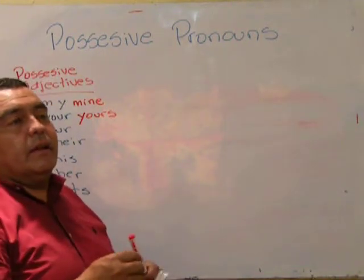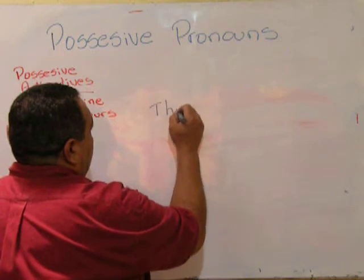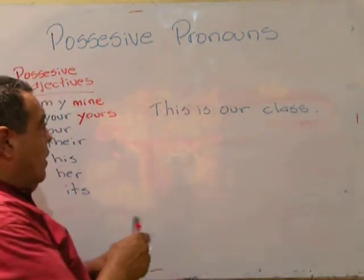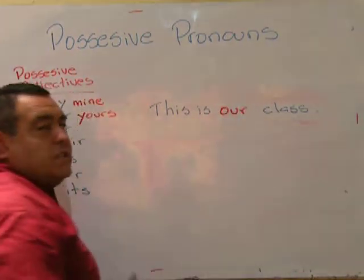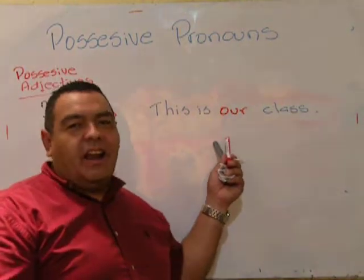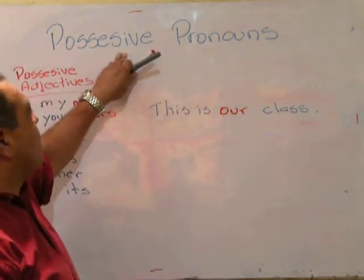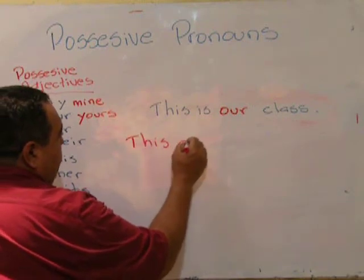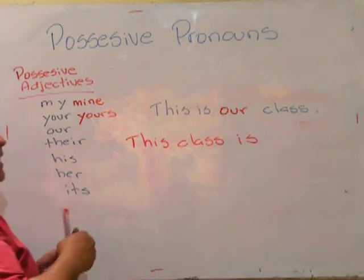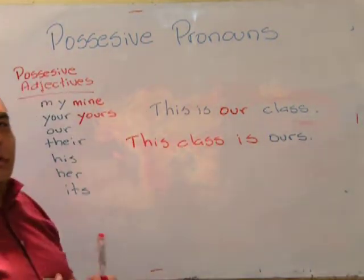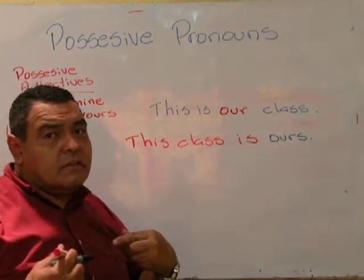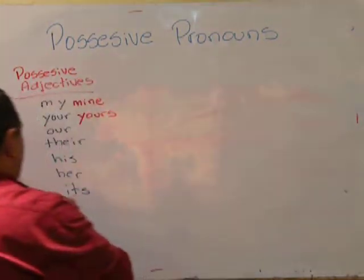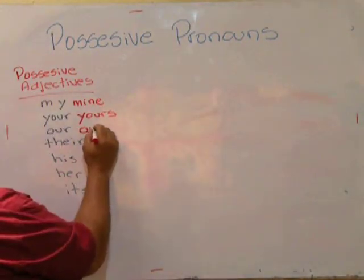Now, 'this is our class.' You already know how to say it another way using the possessive pronoun. You don't know how to say 'our' yet — I'm going to show you right now. This class is ours. Compreended? Very simple. 'This is our class' becomes 'this class is ours.' So the possessive pronoun for 'we' is 'ours.'